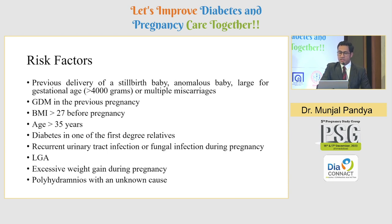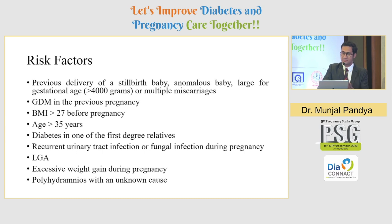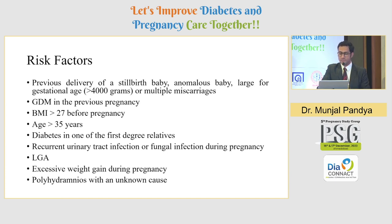Risk factors include previous delivery of a stillbirth, anomalous baby, or large-for-gestational-age baby; GDM in a previous pregnancy or on the maternal side; BMI more than 27 before pregnancy — and how many patients come before pregnancy for BMI calculation? This highlights the importance of GPs. Other risk factors include age more than 35 years, diabetes in a first-degree relative, recurrent UTI or fungal infection indicating possible diabetes, large-for-gestational-age fetus, excessive weight gain during pregnancy, and polyhydramnios with unknown cause.